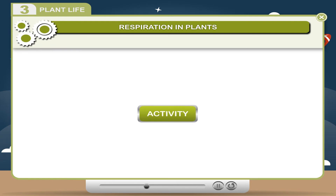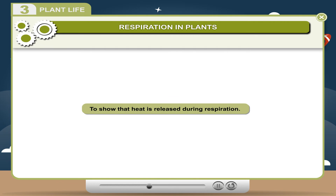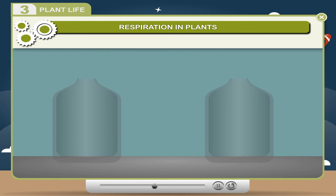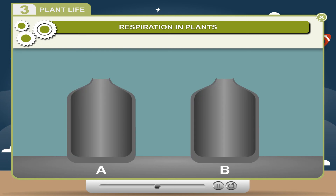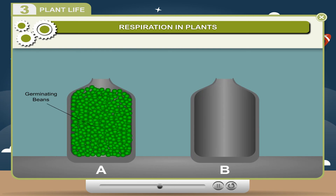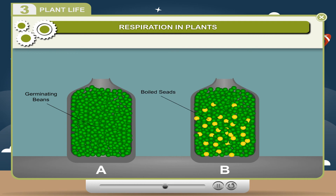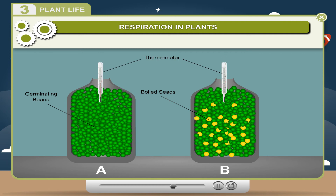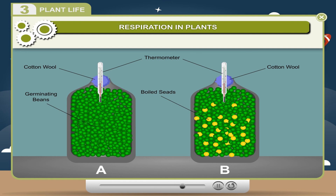Activity: To show that heat is released during respiration. Take two thermoflasks. Put germinating bean seeds in flask A, and in flask B put some boiled seeds. Insert a thermometer in each flask and close the mouth of each flask with cotton wool. Leave the flasks for three to four hours.